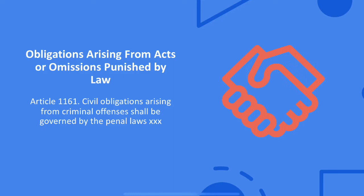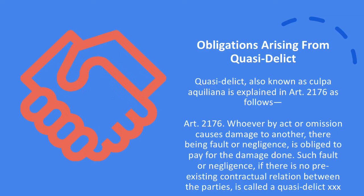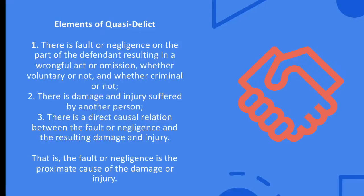Obligations arising from acts or omissions punished by law: under Article 1161, civil obligations arising from criminal offenses shall be governed by the penal laws. This article refers to civil obligations arising from criminal offenses, anchored on the well-accepted principle that every person criminally liable for a felony is also civilly liable. Obligations arising from quasi-delict: quasi-delict, also known as culpa aquiliana, is explained in Article 2176 of the Civil Code, which provides that whoever by act or omission causes damage to another, there being fault or negligence, is obliged to pay for the damage done. Such fault or negligence, if there is no pre-existing contractual relation between the parties, is called a quasi-delict.